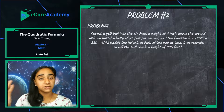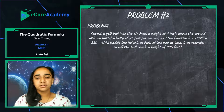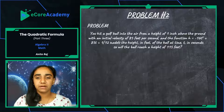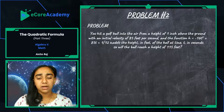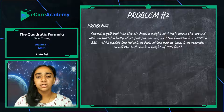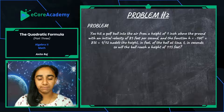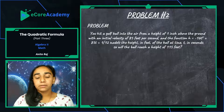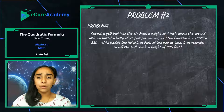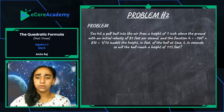Let's do something a little bit harder — a word problem. You hit a golf ball into the air from a height of one inch above the ground with an initial velocity of 85 feet per second. The function h equals negative 16t squared plus 85t plus 1/12 models the height in feet of the ball at time t in seconds. The question is: will the ball reach a height of 115 feet?